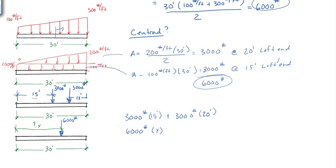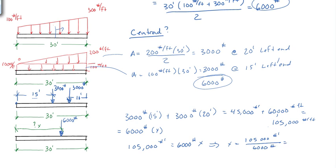This one gives us 45,000 pound-feet plus 60,000 pound-feet, which equals 105,000 pound-feet. And that has to equal 6,000 times x. So x is equal to 105,000 pound-feet divided by 6,000 pounds equals 17.5 feet.